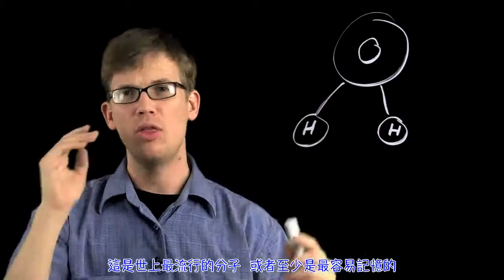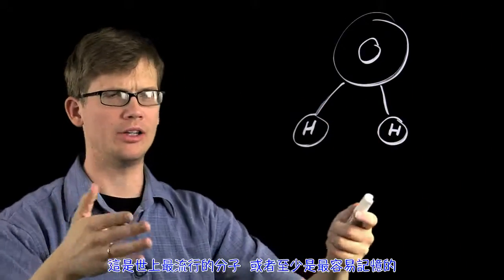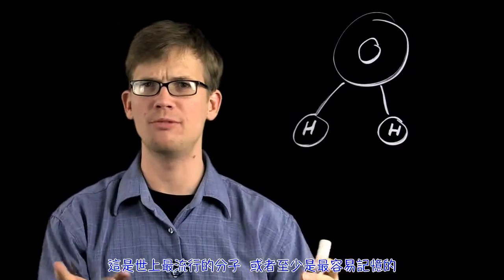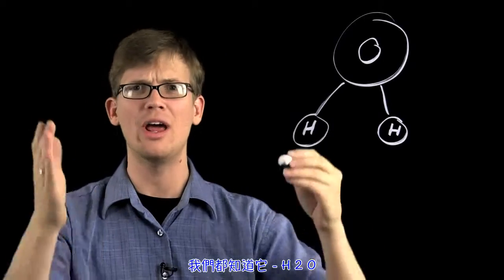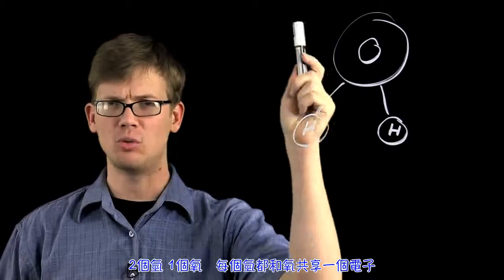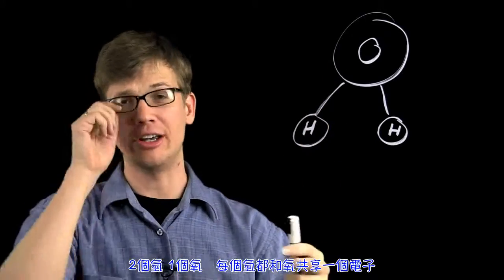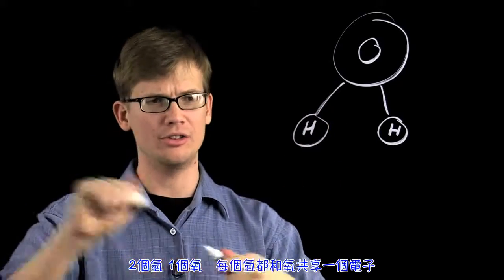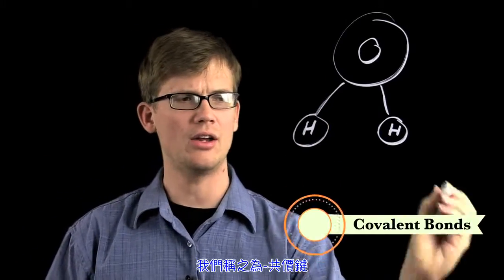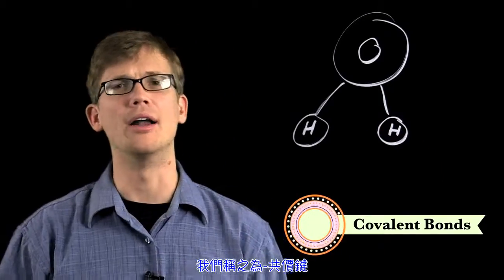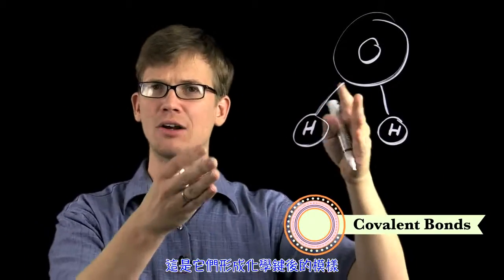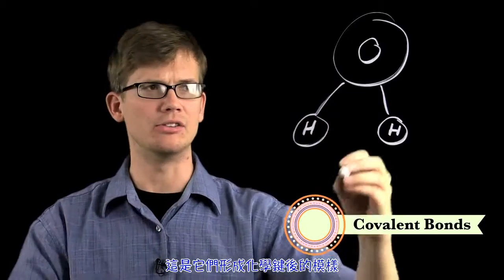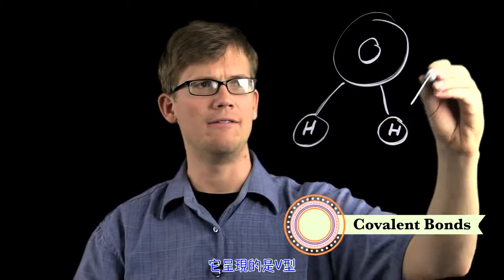In order to do that we're going to have to start out with the world's most popular molecule, or at least the world's most memorized molecule — good old H2O. Two hydrogens, one oxygen. The hydrogens each sharing an electron with oxygen in what we call a covalent bond. I've drawn my water molecule in a particular way and this is actually the way that it appears — it is V-shaped.